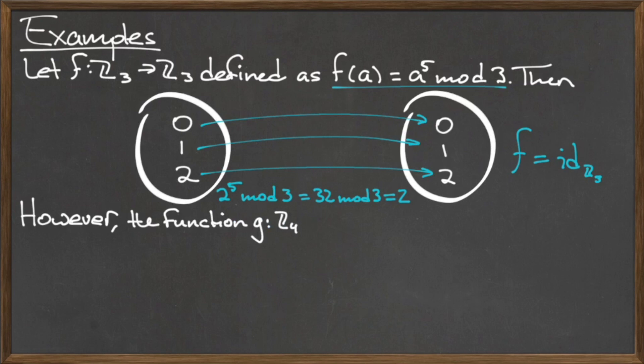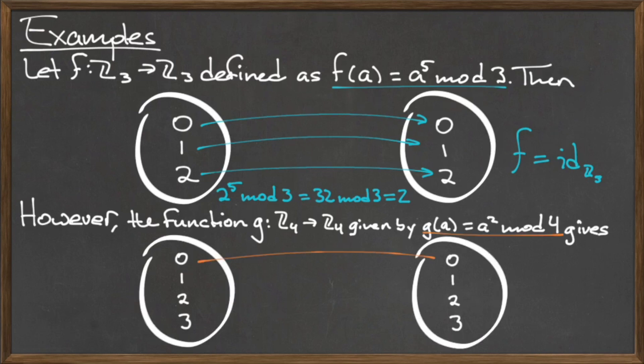Now consider the function g from Z4 to Z4 given by g(a) = a² mod 4. This function is not an identity function on Z4. The image of 0 under g is 0, and the image of 1 under g is 1. Since 2 and 3 do not map to themselves under g, this function is not an identity.